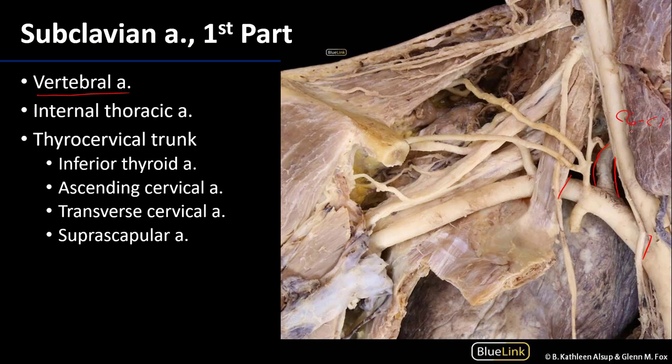The other major artery supplying the brain is the internal carotid, and we'll see in subsequent sessions how the vertebral artery together with the internal carotid artery supplies the cranial cavity. The next major branch of the first part of the subclavian artery is the internal thoracic artery, which supplies the anterior and lateral walls of the thorax as well as parts of the wall of the abdomen with blood.